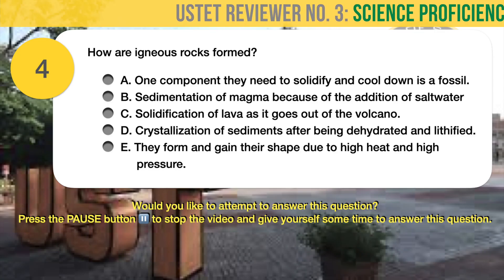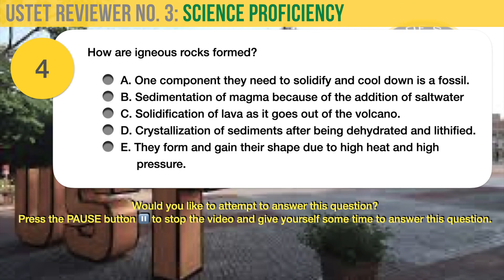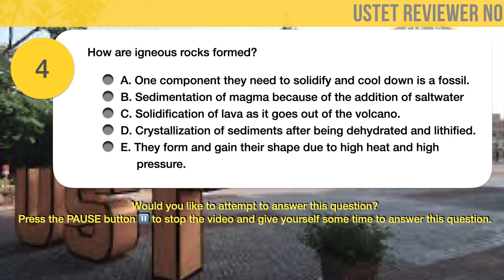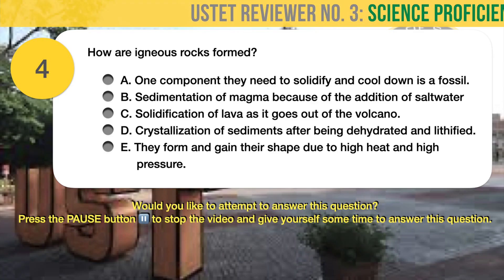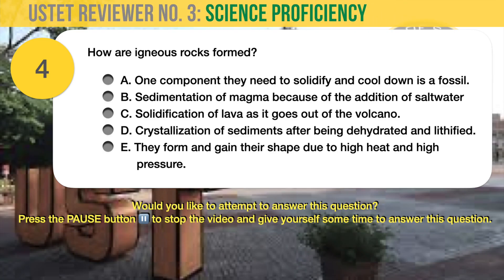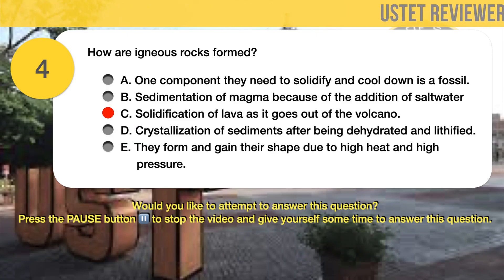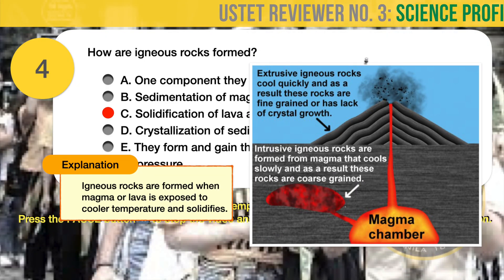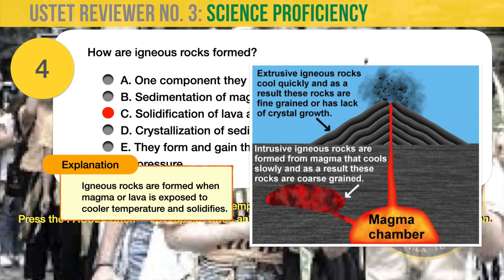Question number 4. Earth Science. How are igneous rocks formed? A. One component they need to solidify and cool down is a fossil. B. Sedimentation of magma because of the addition of salt water. C. Solidification of lava as it goes out of the volcano. D. Crystallization of sediments after being dehydrated and liquefied. E. They form and gain their shape due to high heat and high pressure. The correct answer is C. One of the ways igneous rocks are formed is through the solidification of lava as it goes out of the volcano. Igneous rocks are formed when magma or lava is exposed to cooler temperatures and solidifies. They can be classified into two: intrusive igneous rocks and extrusive igneous rocks.